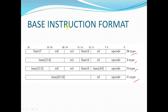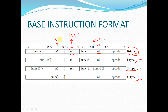Now coming to the base instruction formats. We have four types: R-type (register type), I-type (immediate type), S-type (store type), and U-type. In R-type instructions, bits 0–6 are the opcode, bits 7–11 are rd (destination register), bits 12–14 are funct3, bits 15–19 are rs1 (source one), bits 20–24 are rs2 (source two), and bits 25–31 are funct7.